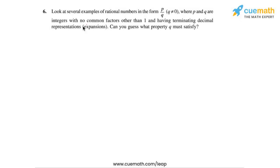Question 6 says: look at several examples of rational numbers in the form P by Q, where Q is not equal to 0, and P and Q are integers with no common factors other than 1, having terminating decimal representations or expansions. Can you guess what property Q must satisfy? So let's look at some rational numbers which have terminating decimal representations.